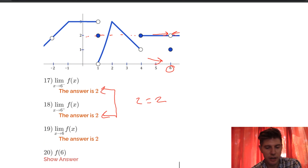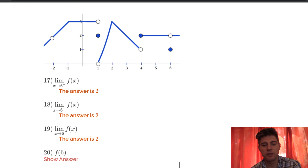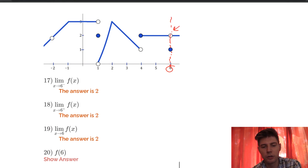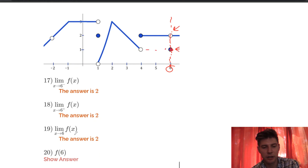The last question is f of 6 — what is the function value at 6? At x equals 6 there's an open dot, which is a hole, so it's not defined there. But there is a filled-in dot, which plugs the hole in a different spot. That filled-in dot occurs at y equals 1, so f of 6 equals 1.